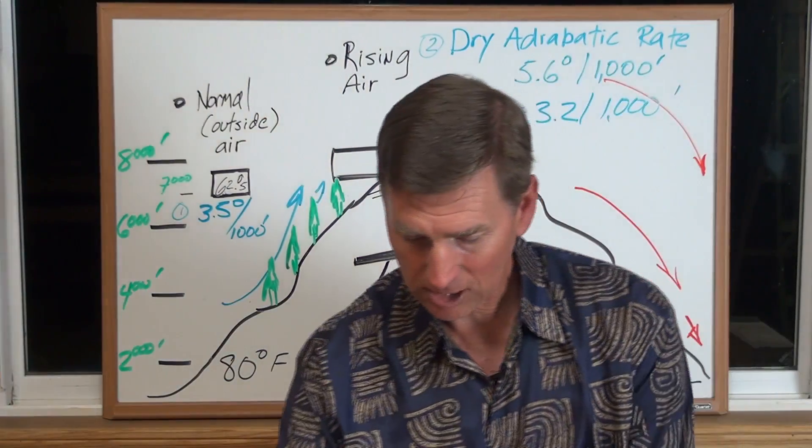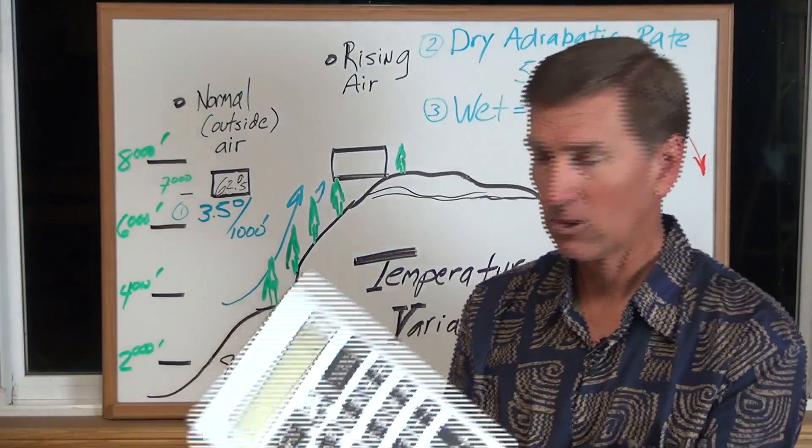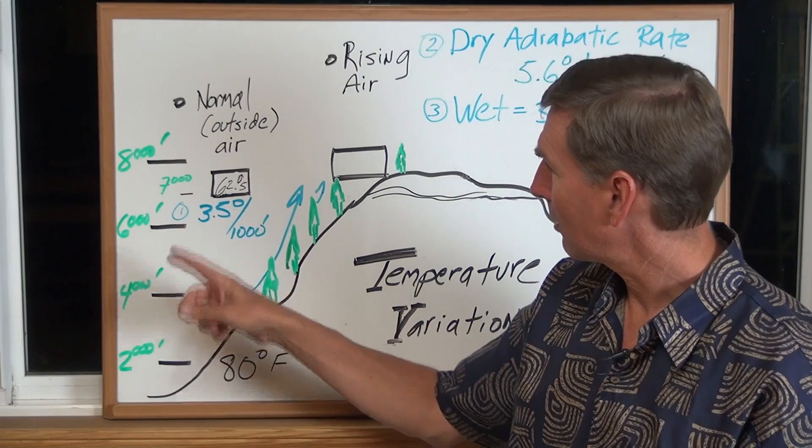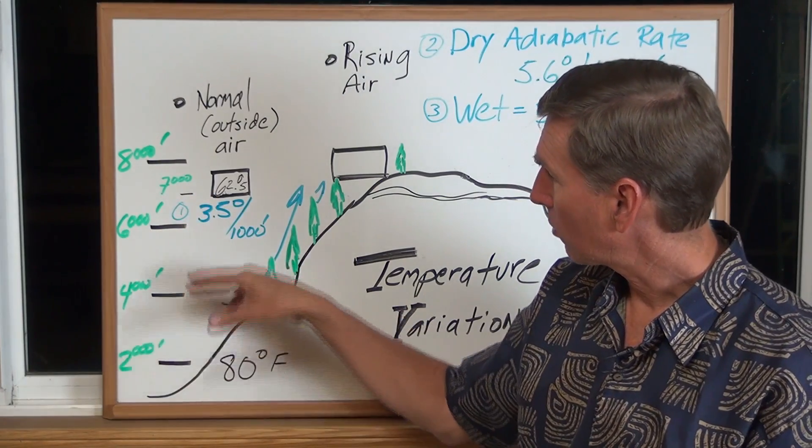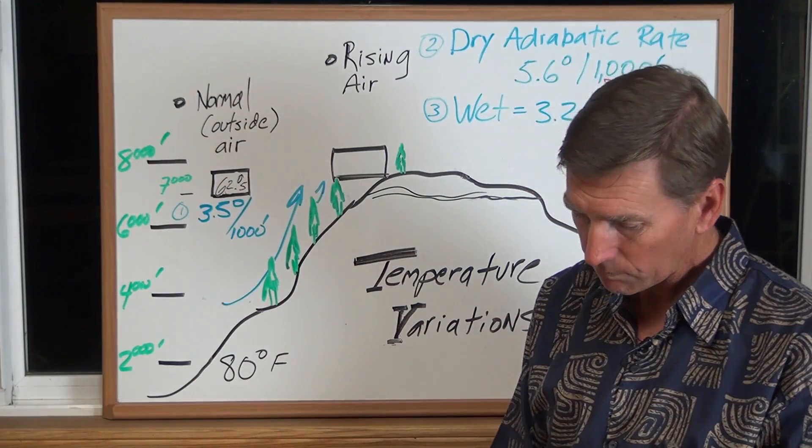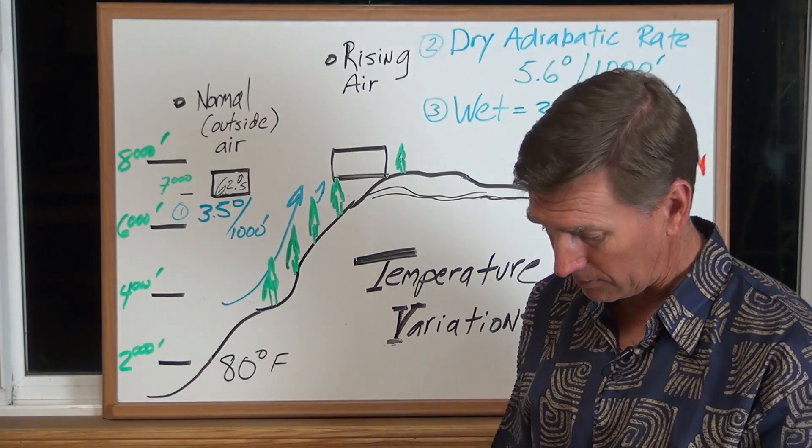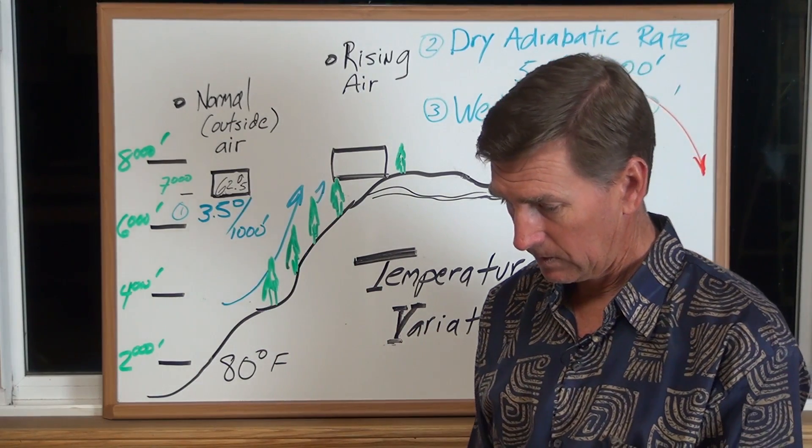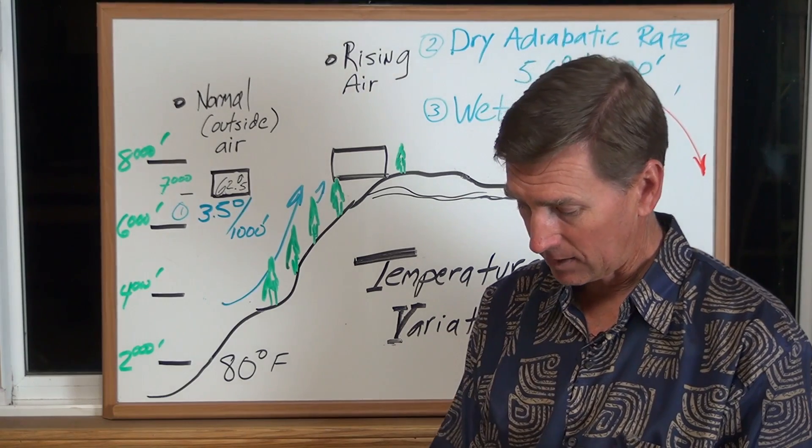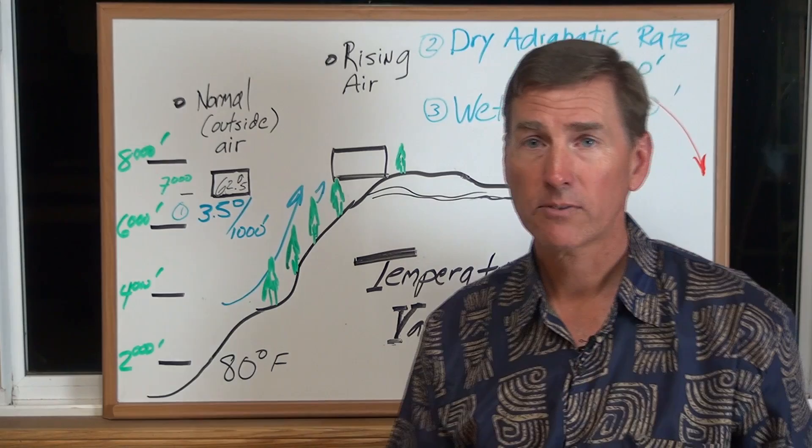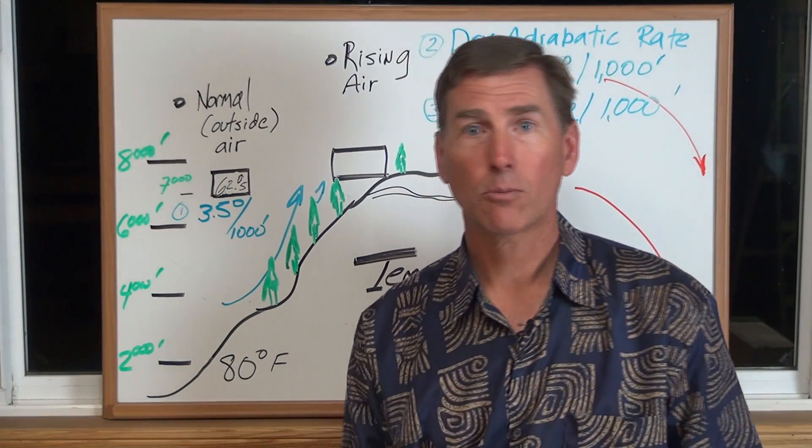And let's just double check me. So I've got this crazy large calculator here. And what I can do is just double check me as we're going from 7,000, we're going up 5,000 feet. So that's 5 units times that rate, and the rate we're using is 3.5, that's 17, and then I'll take that away from 80, 62.5, so I've double checked myself. Now that's the normal lapse rate.